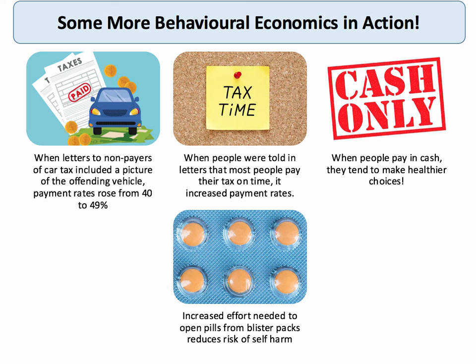Here's a really good example about getting people to pay their car tax. Instead of just sending a letter reminding them their tax is overdue, if you include a picture of the offending vehicle, that triggers an emotional response, and payment rates increased from 40% to just under half. A 9% increase may seem small on the surface, but it represents many millions of pounds of extra tax revenue.